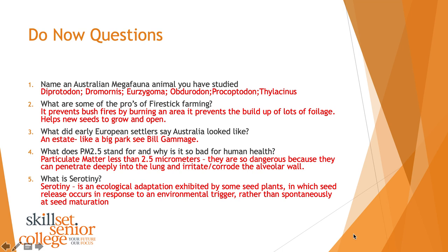Serotony is an ecological adaptation exhibited by some seed plants in which seed release occurs in response to an environmental trigger rather than spontaneously at seed maturation. What we're talking about is that these seeds actually need something in the environment to happen for them to grow. The example we used was fire — some seeds won't germinate unless fire comes their way. We looked at a pine cone that has resin which doesn't open until that resin is burned away; that plant will not grow unless touched by fire, which is an amazing evolutionary adaptation.